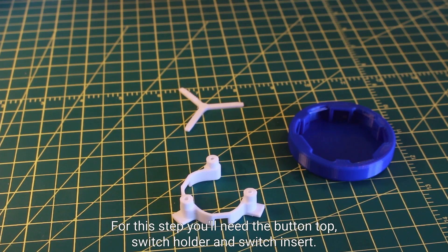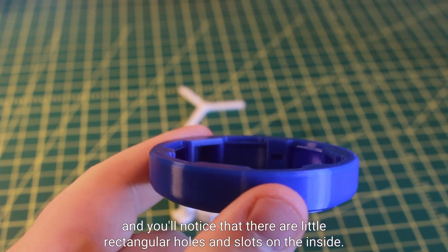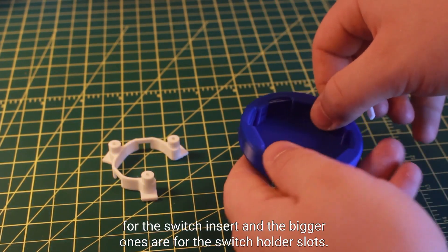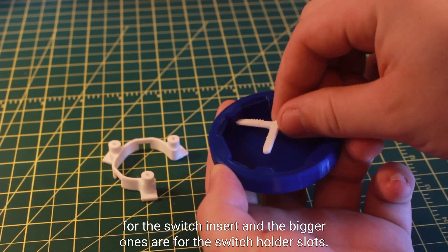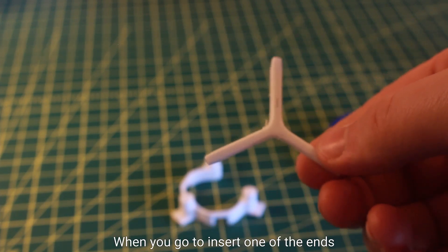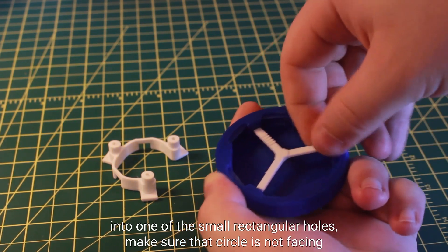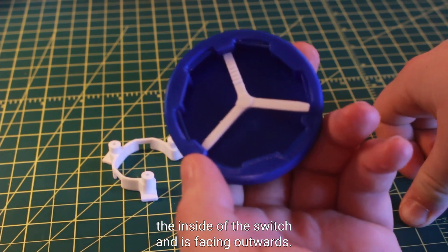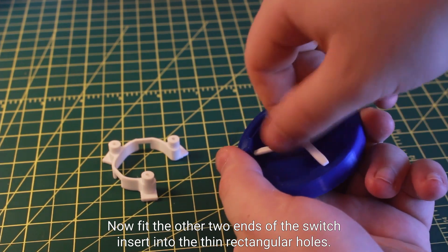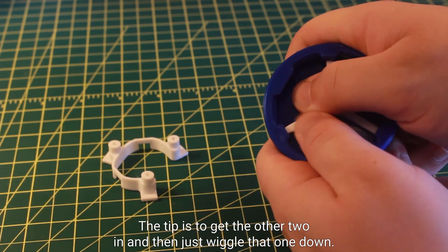For this step you'll need the button top, switch holder, and switch insert. Look on the inside of the switch button and you'll notice that there are little rectangular holes and slots on the inside. The really small thin ones are for the switch insert and the bigger ones are for the switch holder slots. Take a look at the switch insert and notice one side has a raised circle. When you go to insert one of the ends into one of the small rectangular holes, make sure that circle is not facing the inside of the switch and is facing outwards. Now fit the other two ends of the switch insert into the thin rectangular holes. The third one can be a little bit tricky. A tip is to get the other two in and then just wiggle that one down.